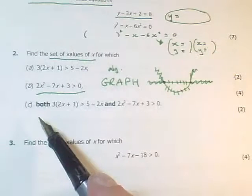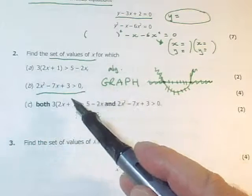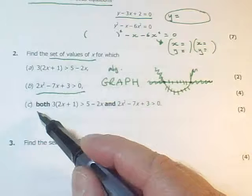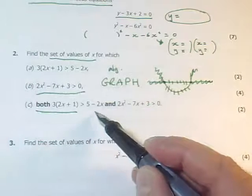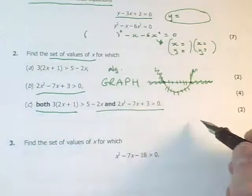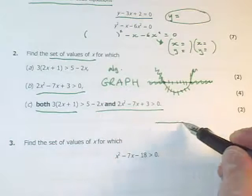Now in part c, we are taking both of these and we want the set of values for x for which both of these are true at once. If you've got your solutions, think about a number line.